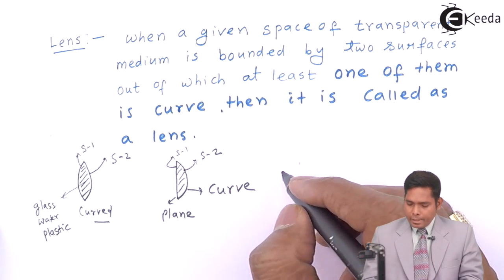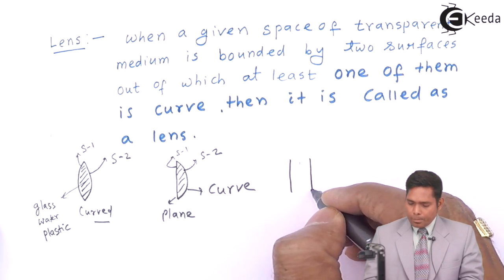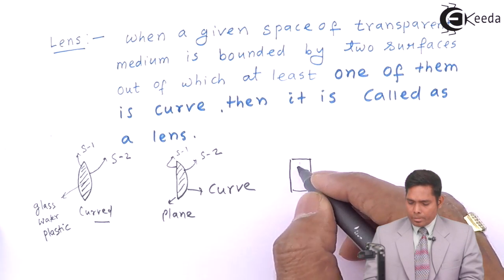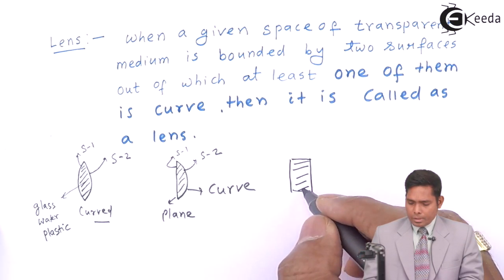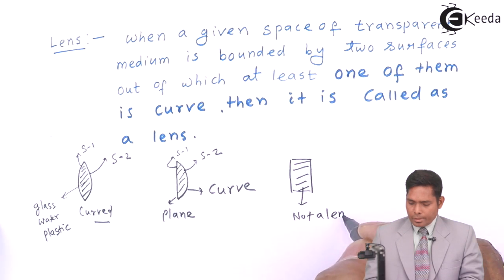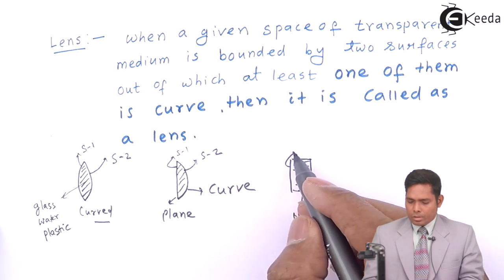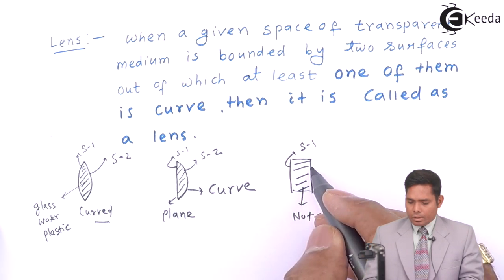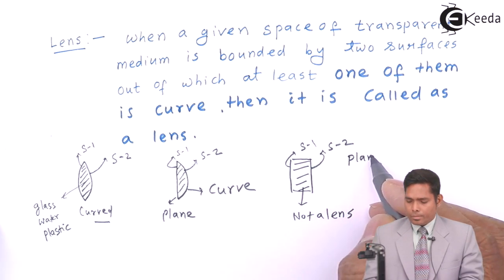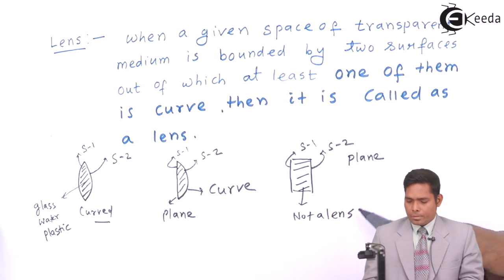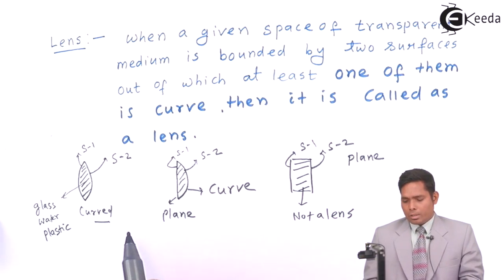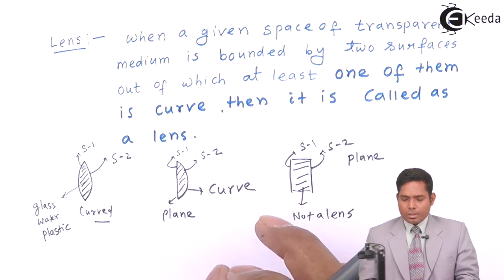And if I have two plain surfaces and bind the medium, then this is not a lens. Because this surface and this surface — both surfaces are plain, so it is not a lens. Out of these two surfaces, one must be curved. This is the definition of a lens.